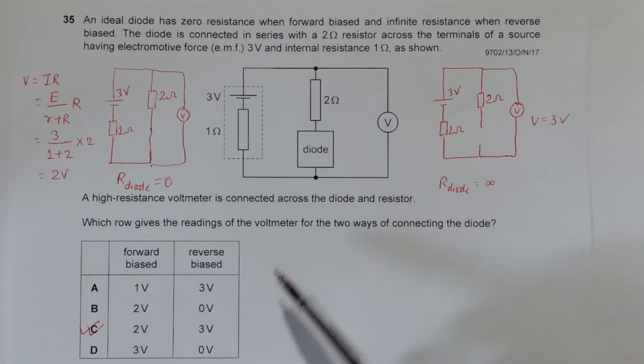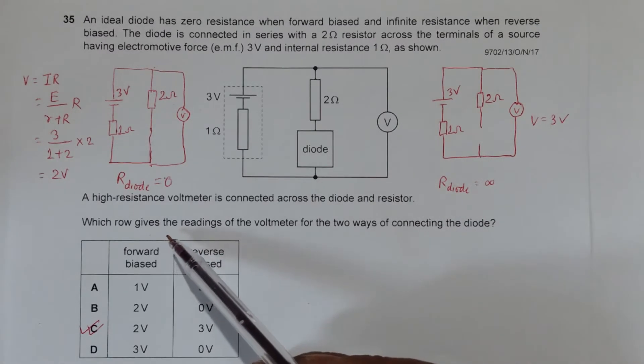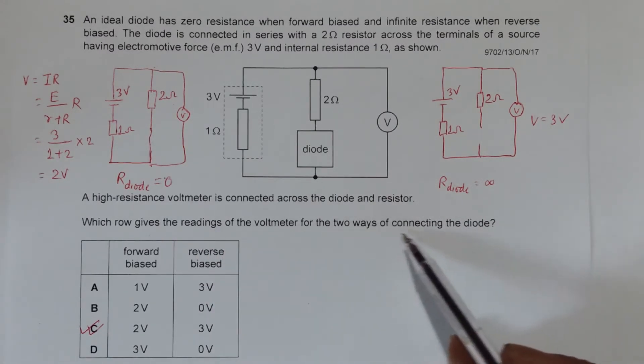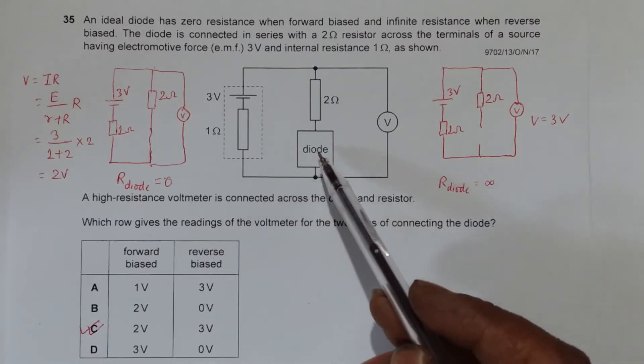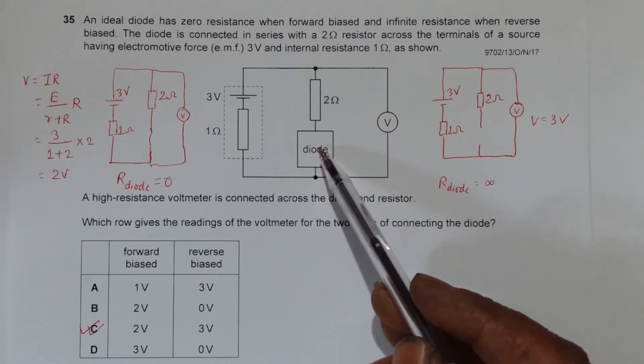We have to find which row gives the reading of the voltmeter for the two ways of connecting the diode. So we have to find the voltmeter reading when it is at zero resistance, that means forward biased.